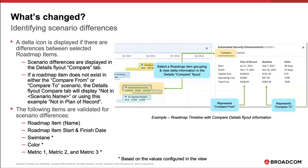Plan of record is on top, baseline is on the bottom. Looking at the start and finish dates between the two scenarios in the compare tab, it appears that those start and finish dates for automated security items were pulled in roughly 38 days, give or take. But the overall cost went up significantly to do so.